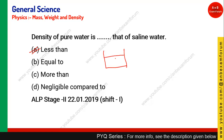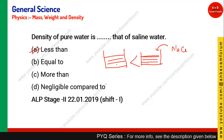Pure water has nothing dissolved in it. Saline water has salt — sodium chloride (NaCl) — dissolved in it. The density of saline water is greater than that of pure water. To understand why: density = mass/volume. When you dissolve sodium chloride, the volume doesn't significantly change, but the mass increases.